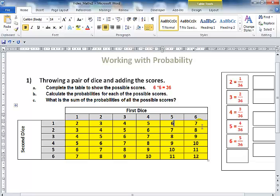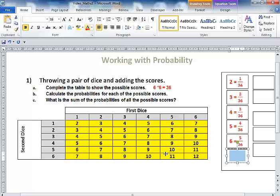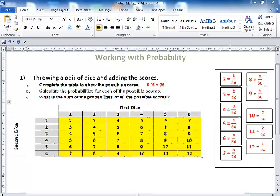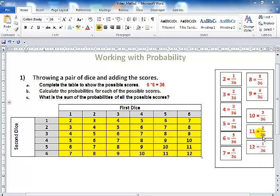Let's look at seven: one, two, three, four, five, six. And there, and so on. Right there are all the possible probabilities for each number. So that answers calculate the probability for each of the possible scores.